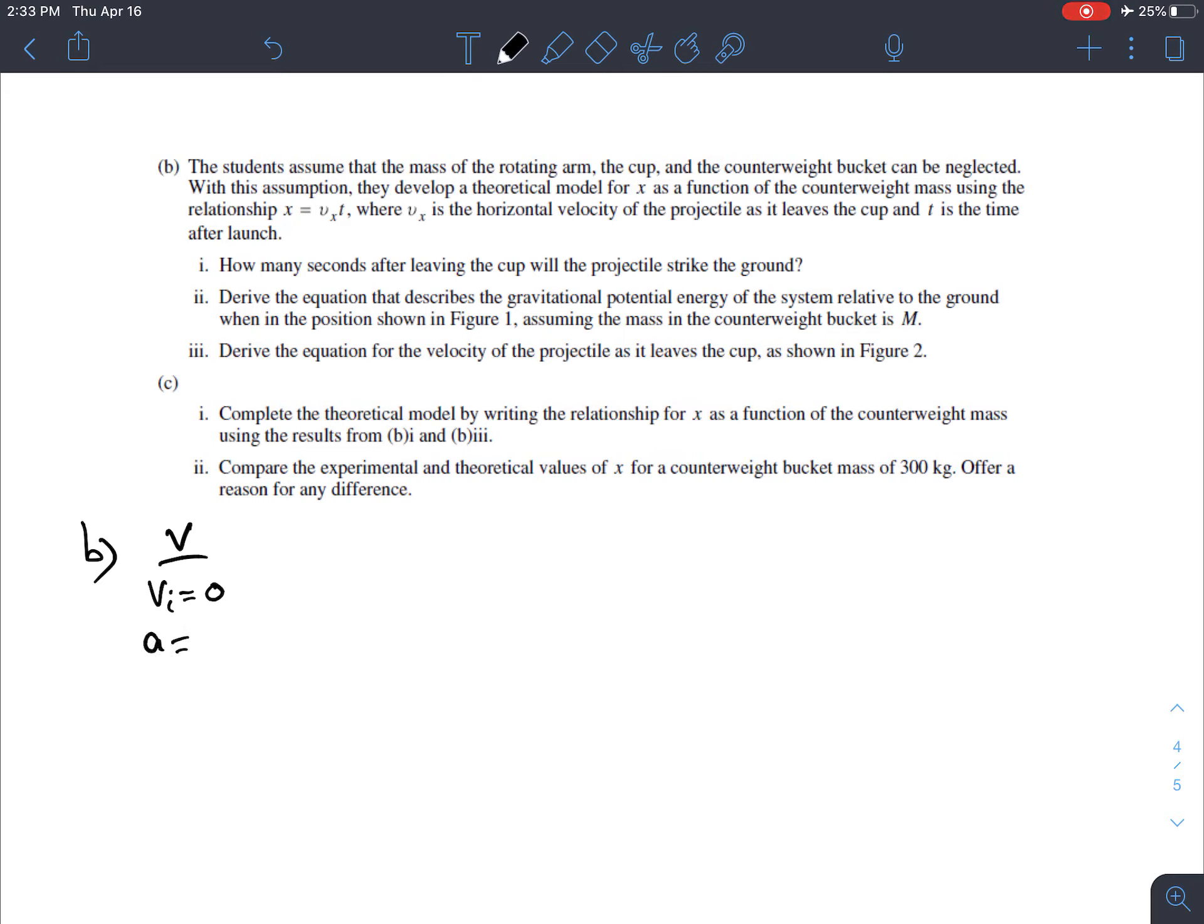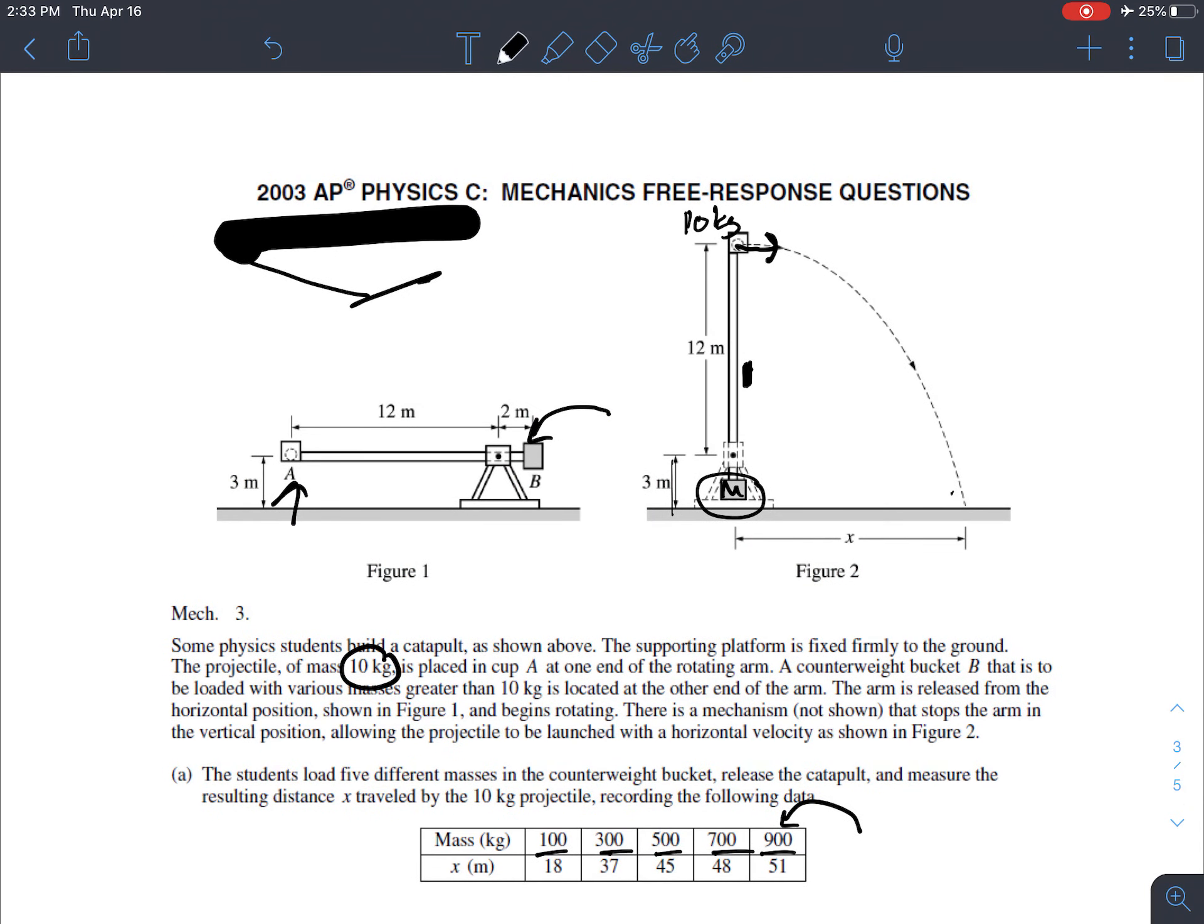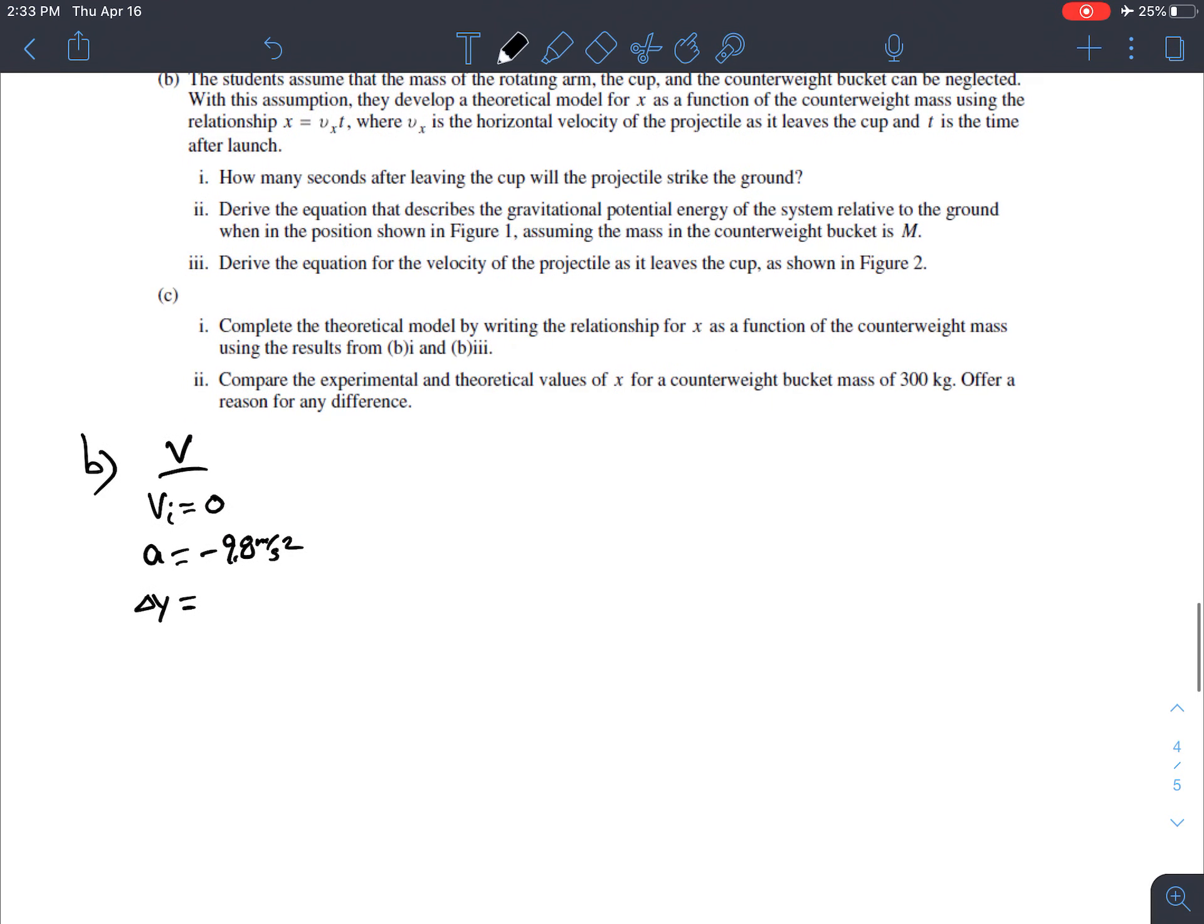So acceleration is minus 9.8 meters per second squared. And what else do we know? The delta y is going to be, let's see, how far is it going to fall? It's got this 12 meters plus this 3 meters, so 15 meters total. And we're interested in finding the time. So delta y is equal to one half a t squared plus vi t.